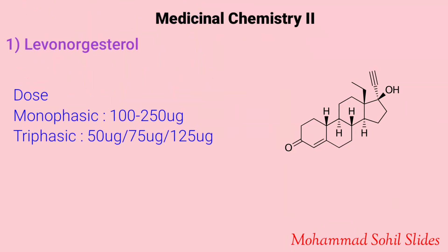The first drug is levonorgestrel. This drug is combined with estrogen to make combination birth control pills. It is useful within 100 to 120 hours of unprotected intercourse; the more time that has passed since intercourse, the less effective the medication becomes. It does not work after implantation has occurred and is effective for long-term prevention of pregnancy. Its mode of action is primarily by preventing ovulation and closing of the cervix to prevent the passage of sperm.